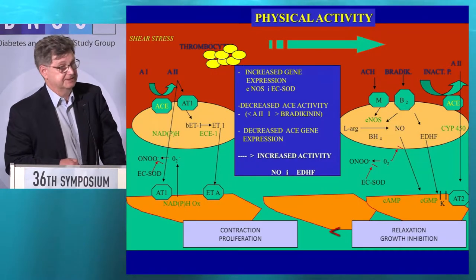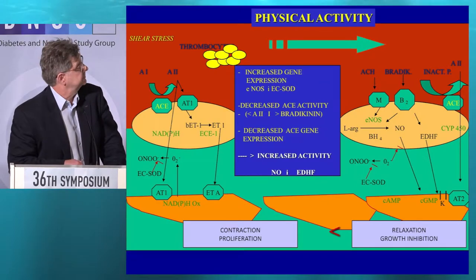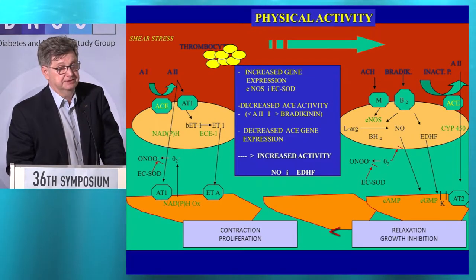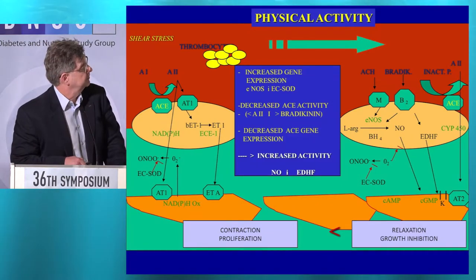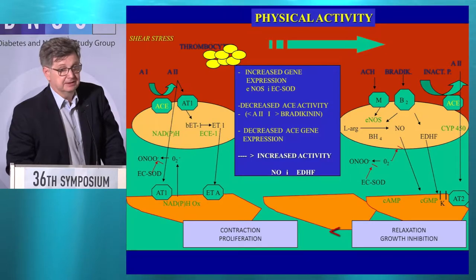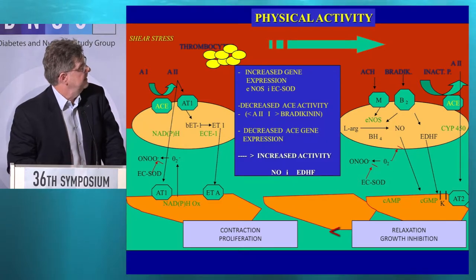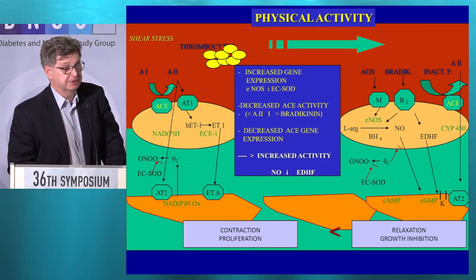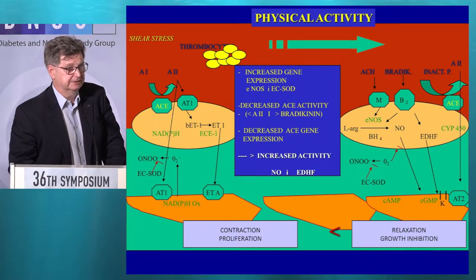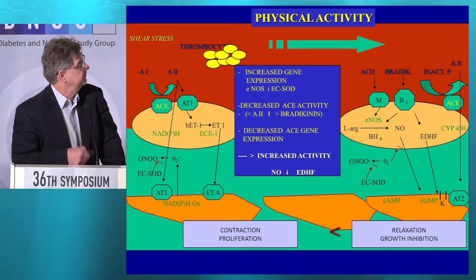What about physical activity and endothelial function? Increased physical activity increases expression of genes related to NO production, but also decreases activity of the renin-angiotensin-aldosterone system. There is reduced activity of angiotensin-converting enzyme and decreased ACE gene expression. This explains how physical activity has a beneficial effect on endothelial function and leads to vasodilatation and decrease of blood pressure — there is more relaxation and less contraction.